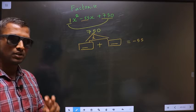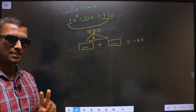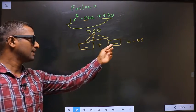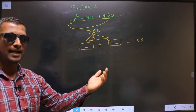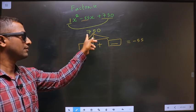I repeat: now look out for two numbers such that when you add the two numbers you should get -55, and when you multiply the two numbers you should get 750.